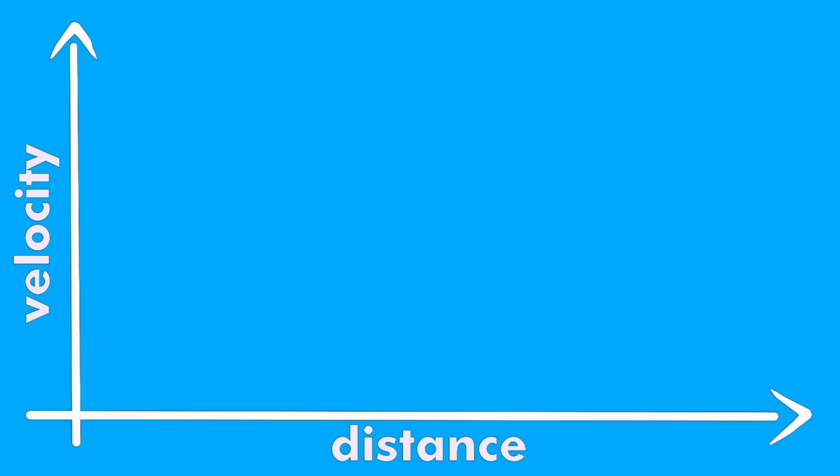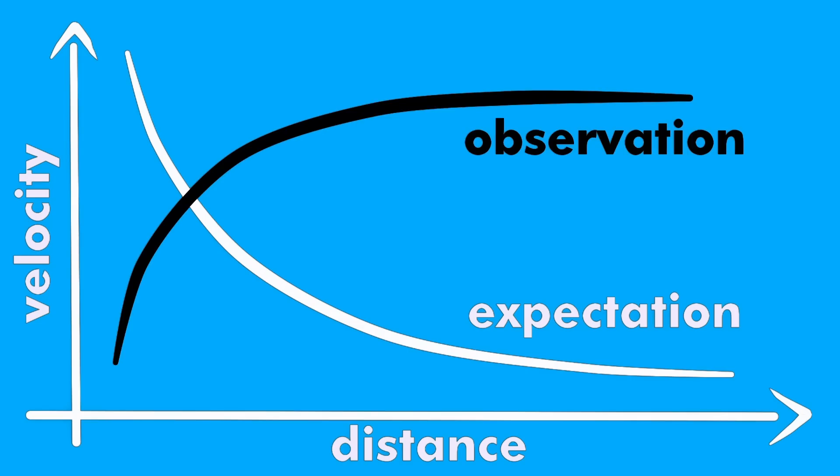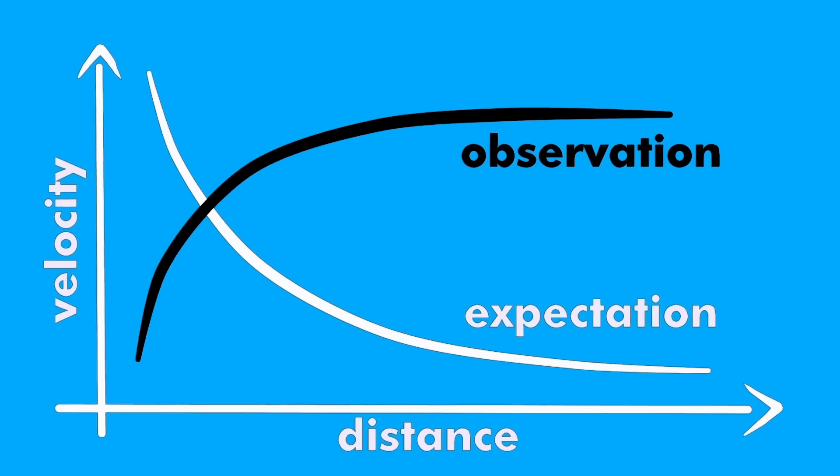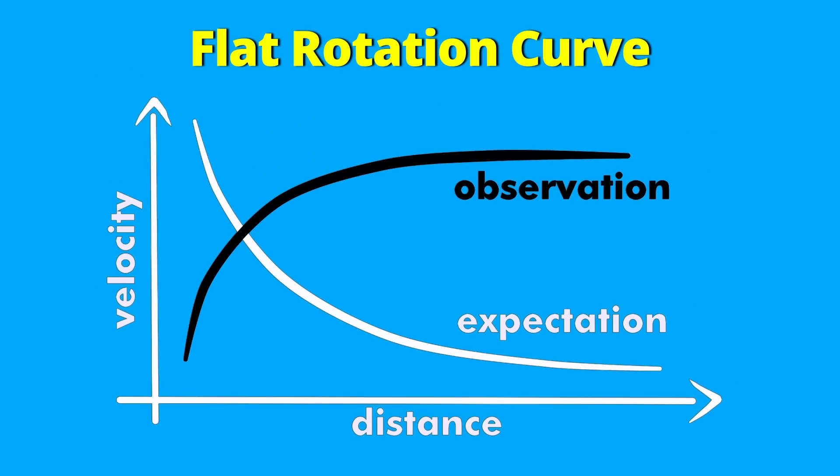If you calculate the rotation speeds as a function of the distance from the center for normal gravity, you find that it should drop with one over the square root of the radius. Trouble is, in most observations, it doesn't drop. Rather, the rotation speed first goes up, and then remains more or less constant. This is called a flat rotation curve.